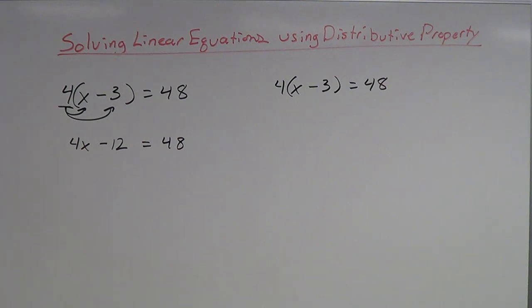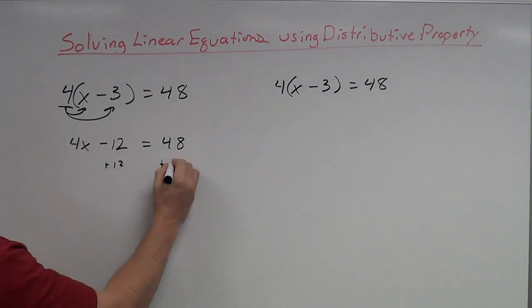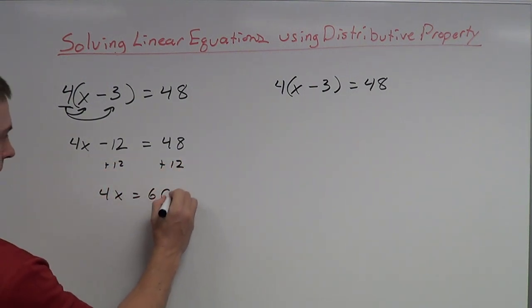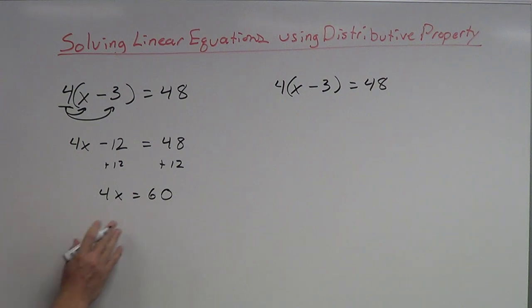And again, the entire goal behind solving equations is to get the variable by itself. So this x I need to get by itself, so get rid of this negative 12, get rid of the 4. So I'm going to add 12 to both sides. And then after that I'm going to divide by 4. x is then equal to, 4 goes into 6 once, remainder 20, 4 goes into 25 times. So x is equal to 15.